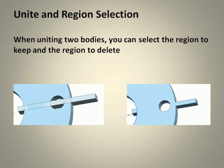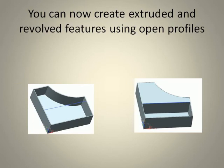Unite and region selection. When uniting two bodies, you can select the region to keep and the region to delete. You can now create extruded and revolved features using open profiles.